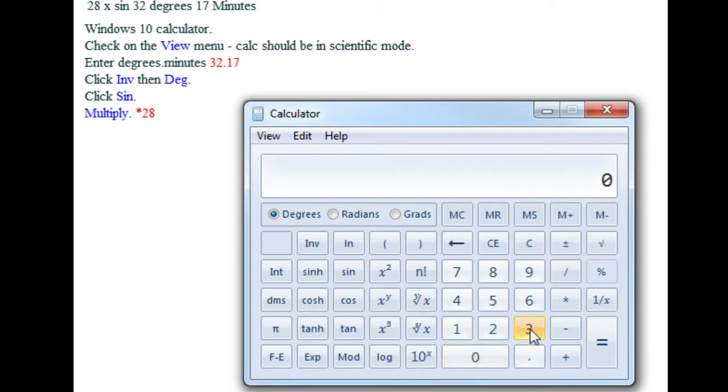Then we tell the calculator what we really meant. We haven't got a degrees button at the moment - we've got DMS. But after we go inv or inverse, then we have a degrees button. Click that and now it knows what we're talking about is degrees.